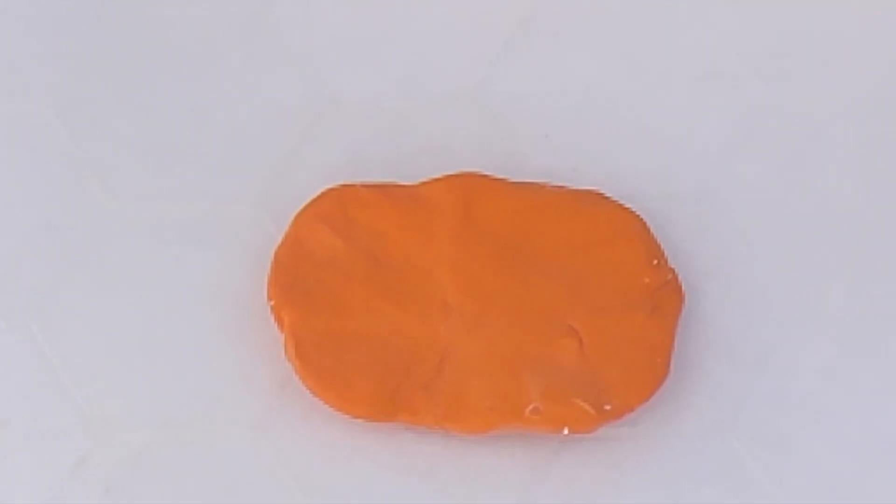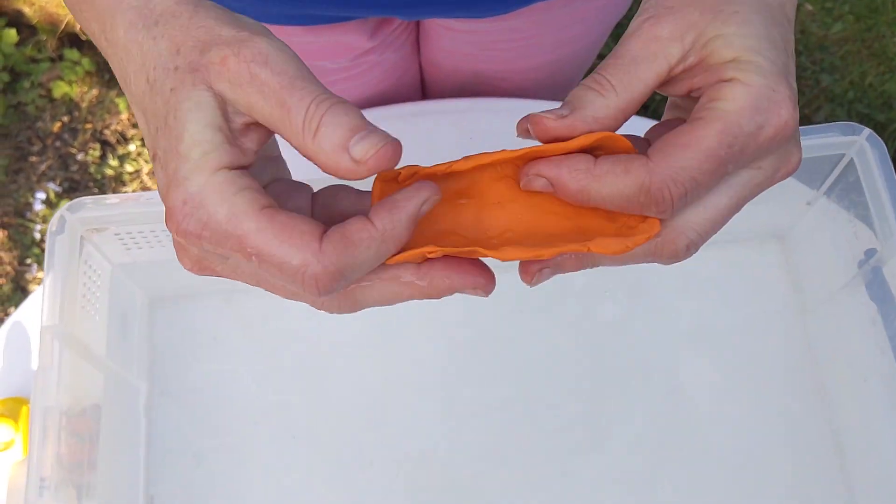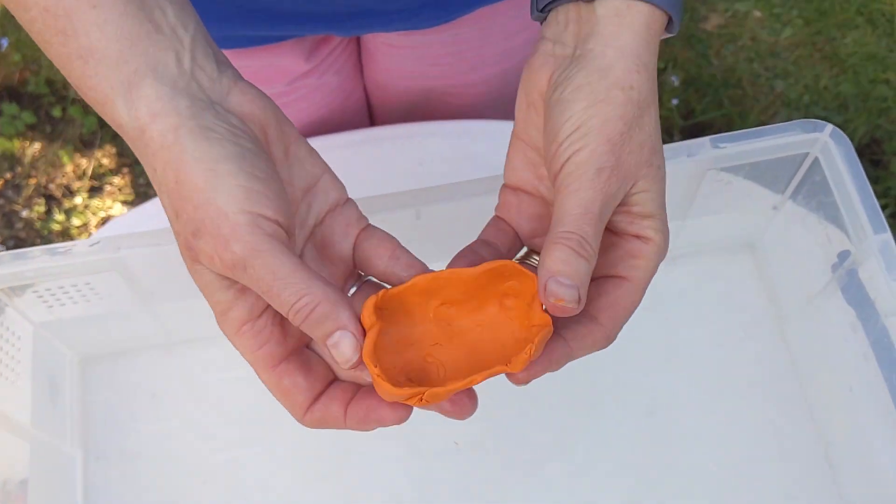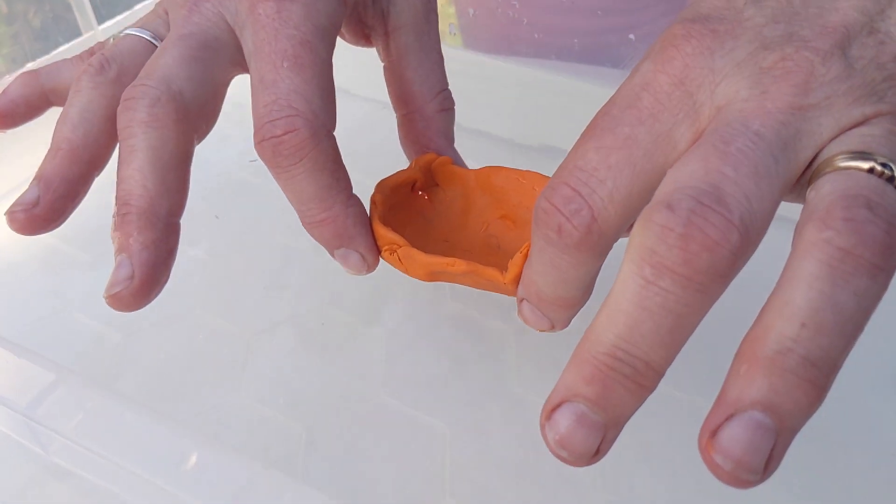What could we do to our flat shape to prevent this from happening? Try adding some sides to your shape and see if it floats. Hopefully you've now got a floating boat.